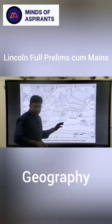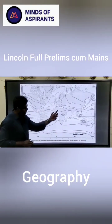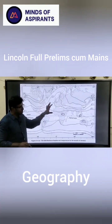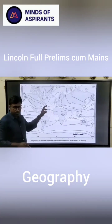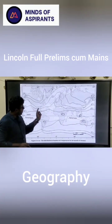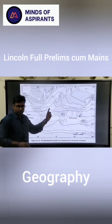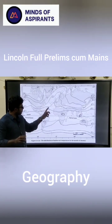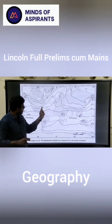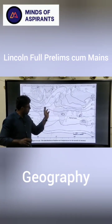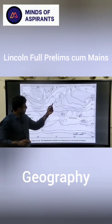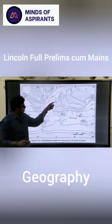The point is that each latitude, if you don't consider the variation, each latitude should have a parallel isotherm. But the fact of the matter is that this parallel isotherm, or this parallel latitude, has an isotherm.